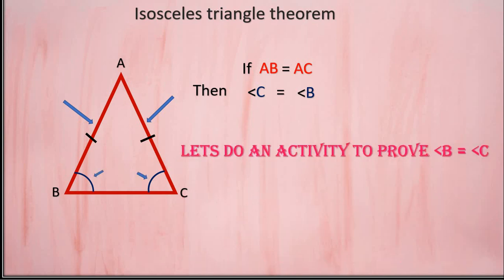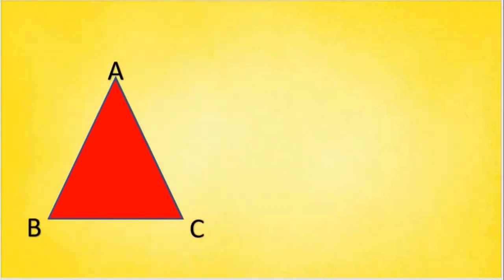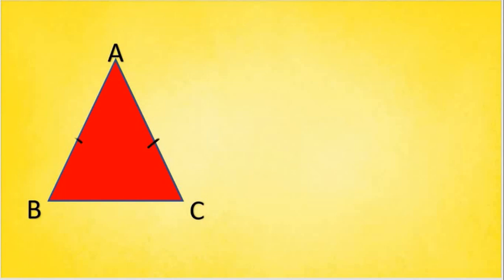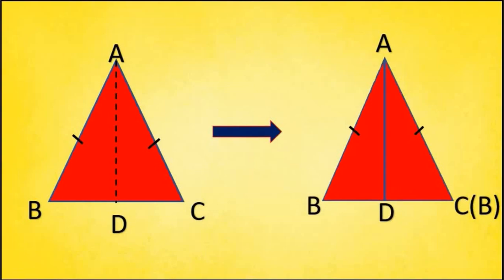Consider an isosceles triangle ABC with two equal sides AB and AC. Draw a line AD and fold it along AD such that point B falls on point C. Let me show you how to do that. I am going to fold it like this.